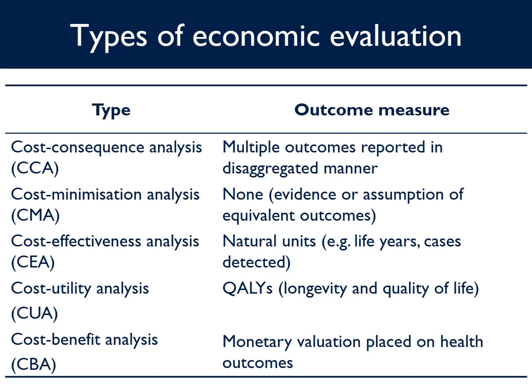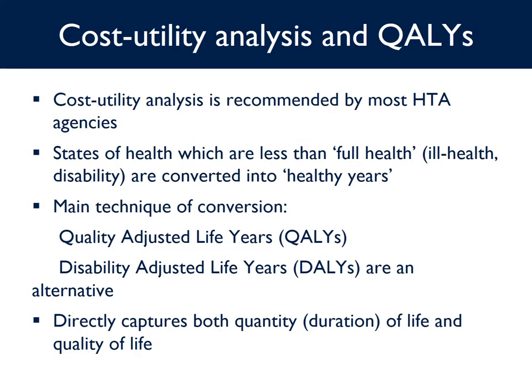In cost effectiveness analysis, we measure health outcomes in actual units and calculate an incremental cost effectiveness ratio — that is, an incremental cost per life year gained or an incremental cost per additional case detected. Cost utility analysis is recommended by most health technology assessment agencies worldwide. Here, states of health less than full health — ill health, disability — are converted into healthy years. The main technique is the use of quality adjusted life years, or QALYs. Disability adjusted life years, or DALYs, are also an alternative. These metrics directly capture both the quantity and quality of life.